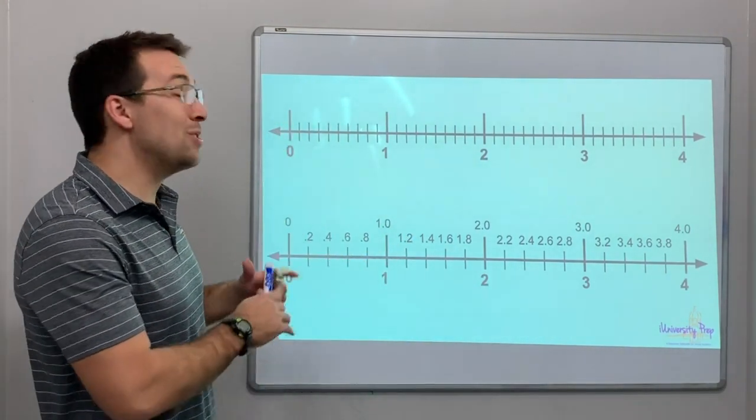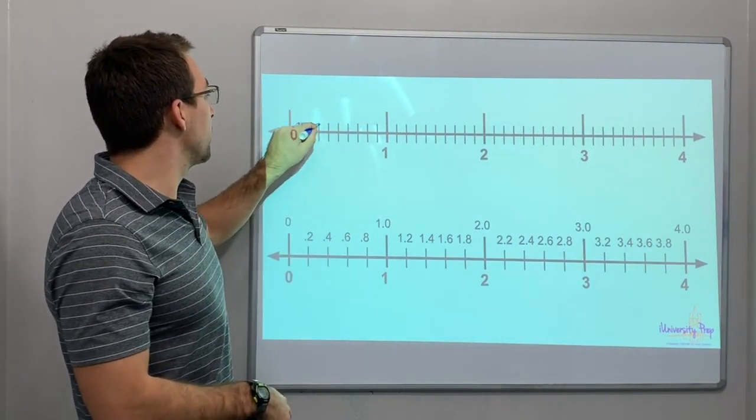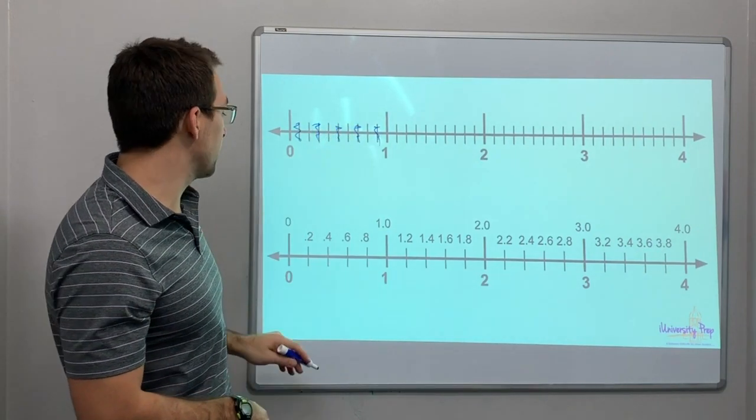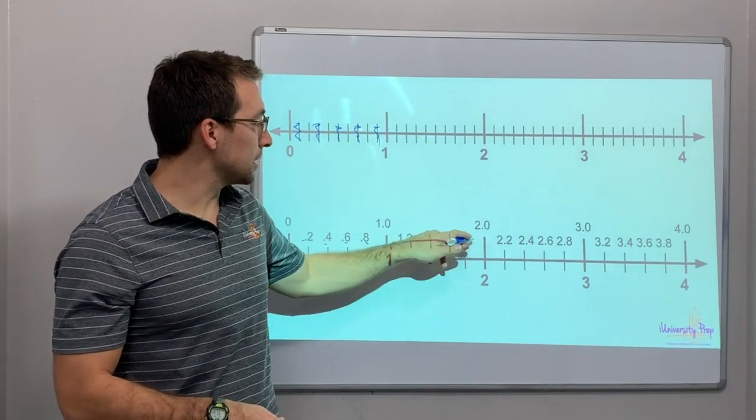So we're showing you this same number line. If we take out 1, 3, 5, 7, 9. What are we left with? 2, 4, 6, 8. 2, 4, 6, 8. Notice. 1, 2, 3, 4.